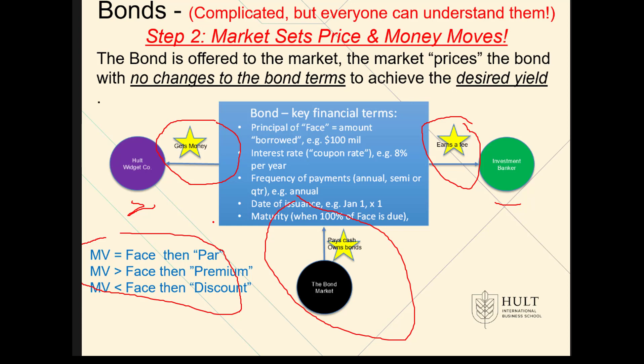The third condition is if the market value is less than the face amount — we say it is issued at a discount. That scenario occurs when the coupon interest rate is not high enough. To induce the investor to buy the bond, you have to cut away at the price, so it's cheaper than 100 and it goes down — that's why it's called a discount. Those are some of the basic terms on the transaction at the point of issuing the bond.